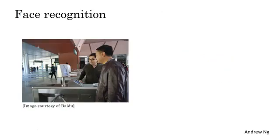So this is a picture of a face recognition turnstile built by a researcher at Baidu, where this is a camera, and it looks at the person approaching the gate, and if it recognizes the person, then the turnstile automatically lets them through. So rather than needing to swipe an RFID patch to enter this facility, in increasingly many offices in China and hopefully more and more in other countries as well, you can just approach the turnstile and if it recognizes your face, it just lets you through without needing you to carry an RFID patch. So how do you build a system like this?